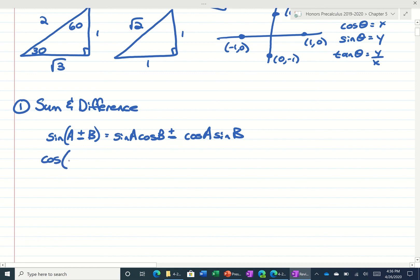For the cosine of a sum, you would use the sine of the first, sine of the second, opposite sign, and then cosine of the first.